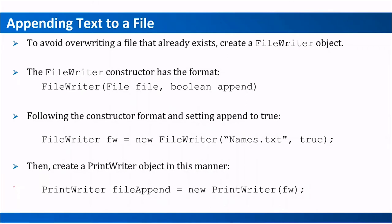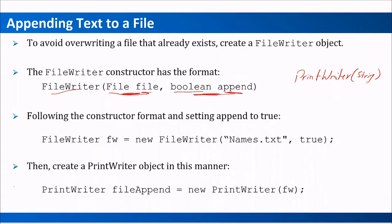If you want to append, what you want to do is create something called a FileWriter. The nice thing about FileWriter is its constructor — it takes a File object and also has another parameter that is a boolean data type called append. Unlike PrintWriter which takes just a string for the file name, FileWriter has a File as an object and also a boolean that can be true or false for setting append. So if you want to append, all you need to do is give the name of the file and set append to true.